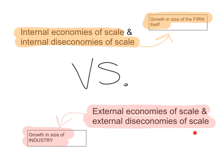External diseconomies of scale happen when too many firms concentrate in the same area, leading to competition for workers, resources, supplies, and raw materials, which could eventually lead to rising costs of production. To summarize: internal economies and diseconomies of scale occur due to growth in the size of the firm itself, while external economies and diseconomies of scale occur due to growth in the size of the industry or the concentration of many similar firms in the same area.